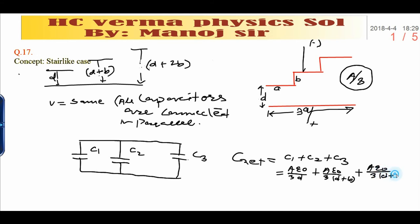Now take common a epsilon 0 upon 3, and inside the bracket you will see 1 upon d plus 1 upon d plus b plus 1 upon d plus 2b.